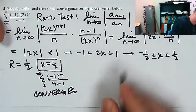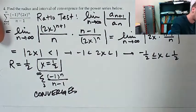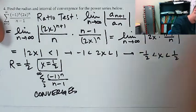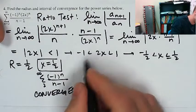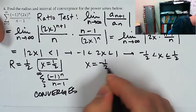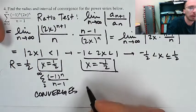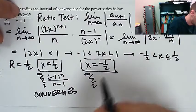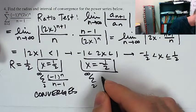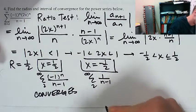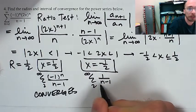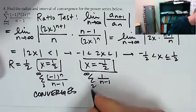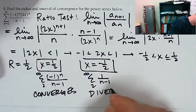So I know that endpoint includes less than or equal to. Now I need to check x equals negative one half. The sum from 2 to infinity of negative 1 to the n times negative 1 to the n is positive 1 to the n over n minus 1. This actually is the harmonic series if you think about it — if it starts with n equals 2, it would be 1 over 1 plus 1 over 2 and so on. So this one diverges because it's the harmonic series.